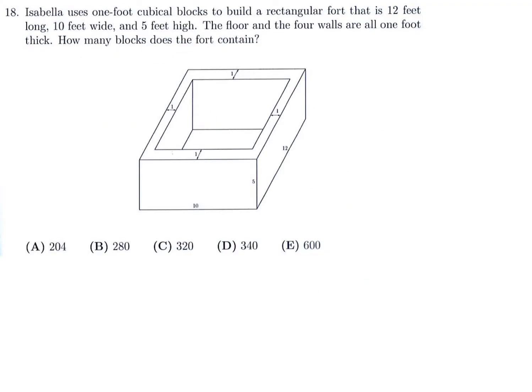Isabella uses 1 foot cubicle blocks to build a rectangular fort that is 12 feet long, 10 feet wide, and 5 feet high. The floor and the 4 walls, the floor and the 4 walls are all 1 foot thick. How many blocks did those 4 contain? Well, I think a lot of students might miss this right here, floor. The floor has to be counted too. You can see the floor here, I think, but that's something a little bit tricky. So the floor has to be counted. So that's the first thing we have to take out. And that's going to be one full slab of dimensions 10 times 12 times 1. They tell you that. 1 foot thick is the floor.